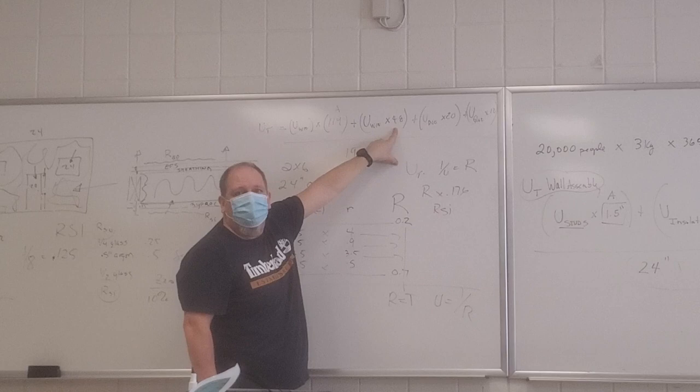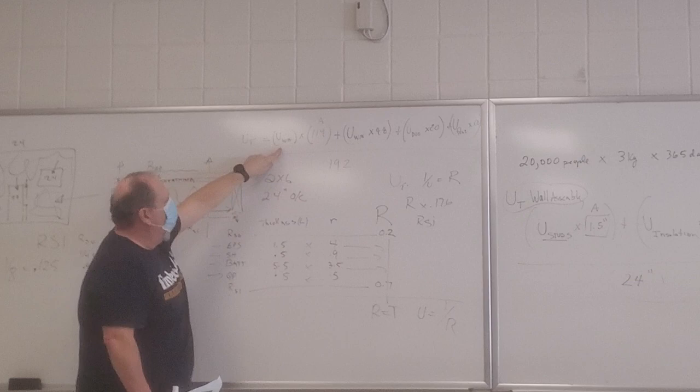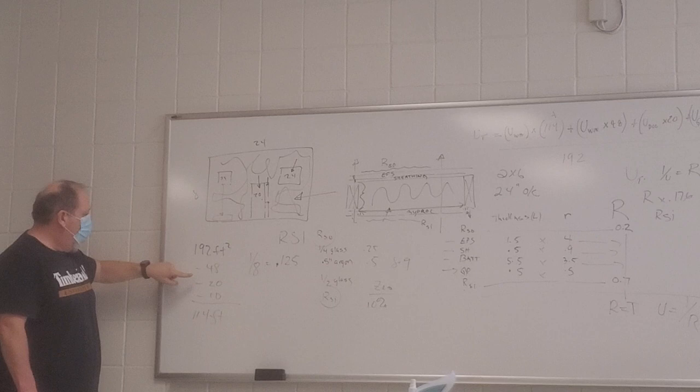48 square feet. So you times all the U-totals by the area. Yeah. The door, 20 square feet. The glazing, 10 square feet. The wall assembly was 24 times 8, which is 192, minus the windows, minus the door, minus the glazing.